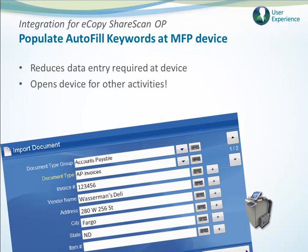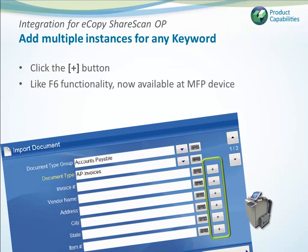Sometimes you also need to add an additional instance or value for a keyword. Keywords like account or name might repeat more than once on a document, so you'll find plus buttons alongside keywords so those additional values can be easily added.